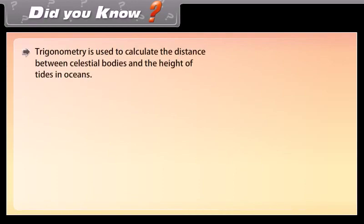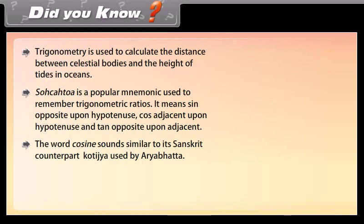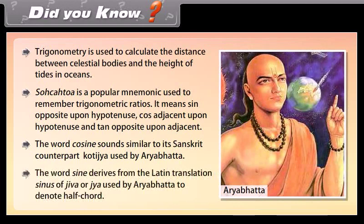Did you know? Trigonometry is used to calculate the distance between celestial bodies and the height of tides in oceans. SOH-CAH-TOA is a popular mnemonic used to remember trigonometric ratios — it means sine equals opposite upon hypotenuse, cos equals adjacent upon hypotenuse, and tan equals opposite upon adjacent. The word cosine sounds similar to its Sanskrit counterpart, kotijya, used by Aryabhata. The word sine derives from the Latin translation, sinus, of jiva or jya, used by Aryabhata to denote half-chord.